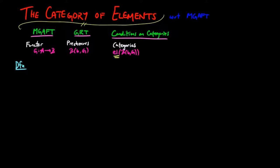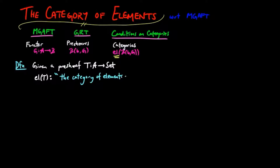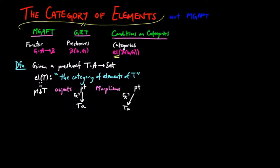We start with the definition. Given a pre-sheaf on A, the category of elements of T is defined to be the category of the singleton set point over T. In other words, the objects are elements X parametrized by this point, and morphisms are commuting triangles.